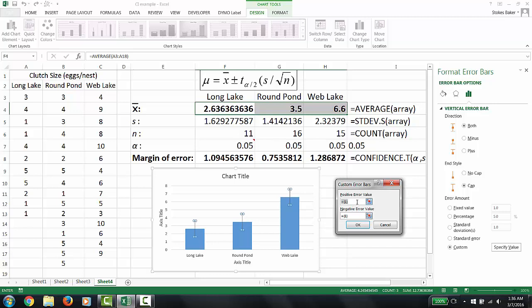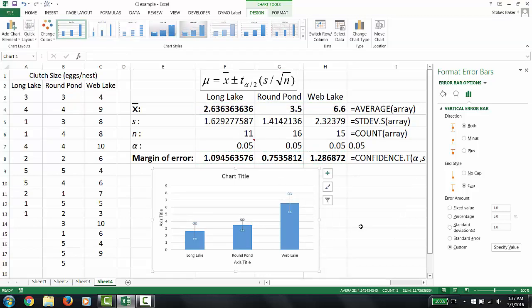Instead we want to put in our margin of error. So we're going to click that and highlight our margin of errors. For the negative value we're going to repeat the process. And there we have the 95% confidence intervals inserted.